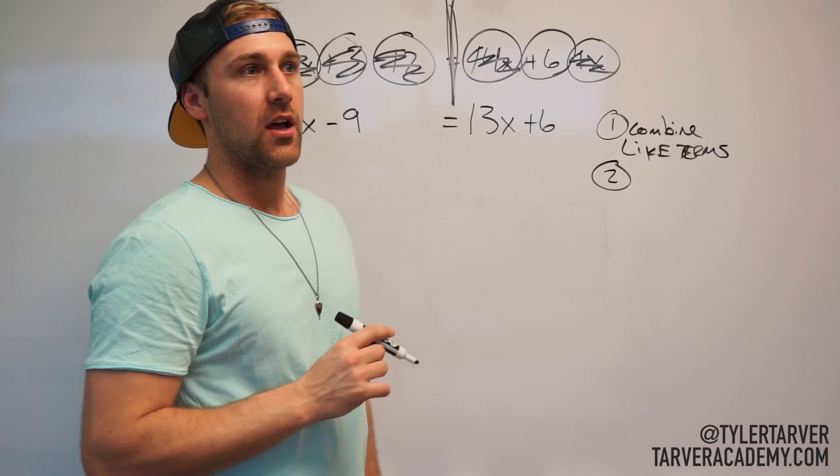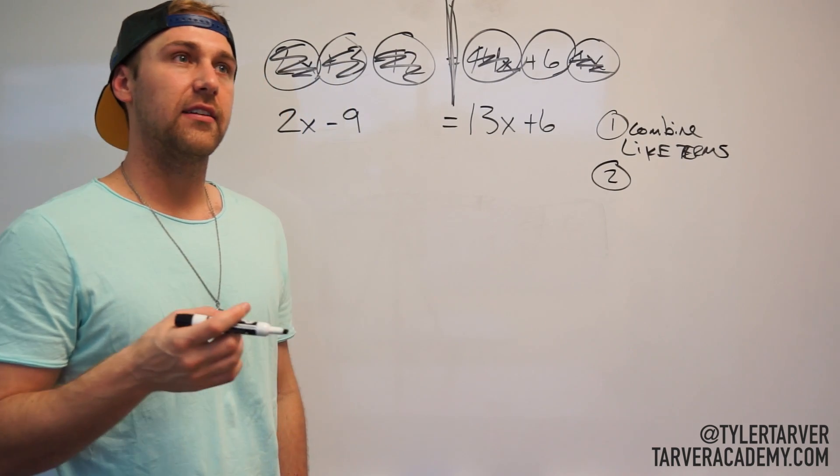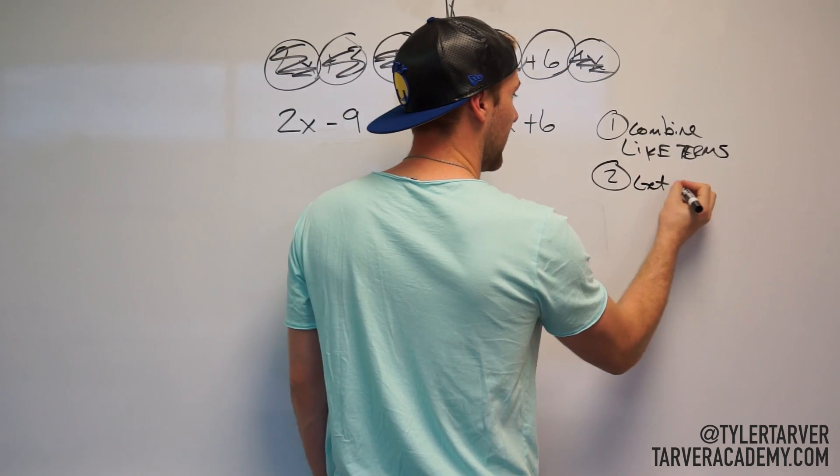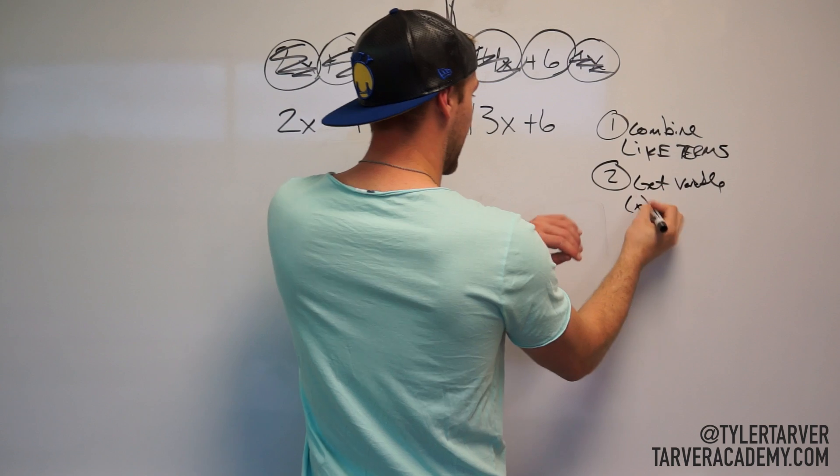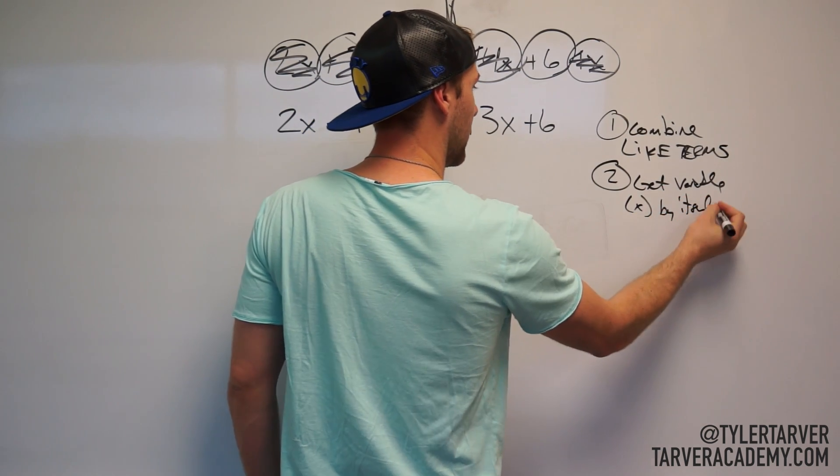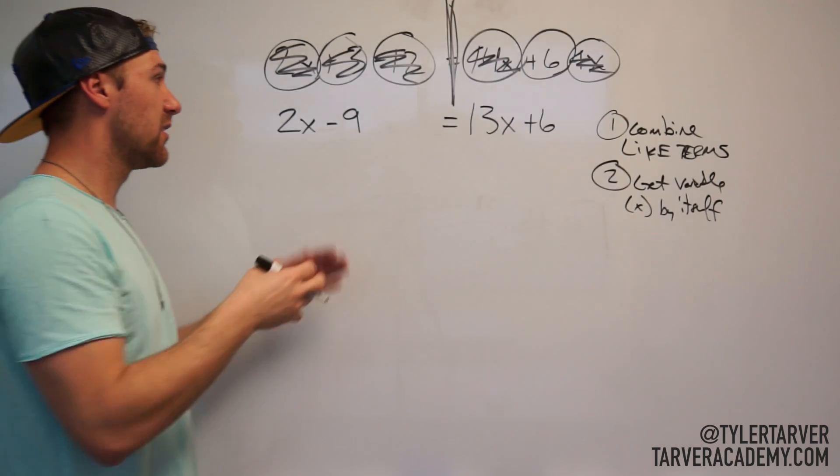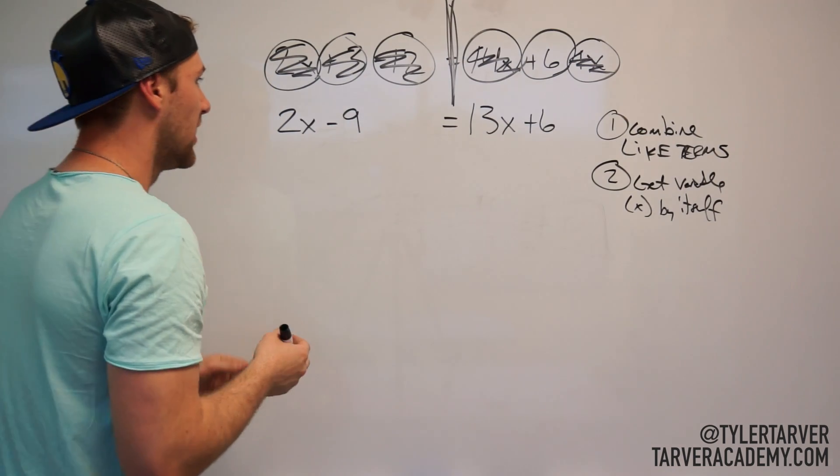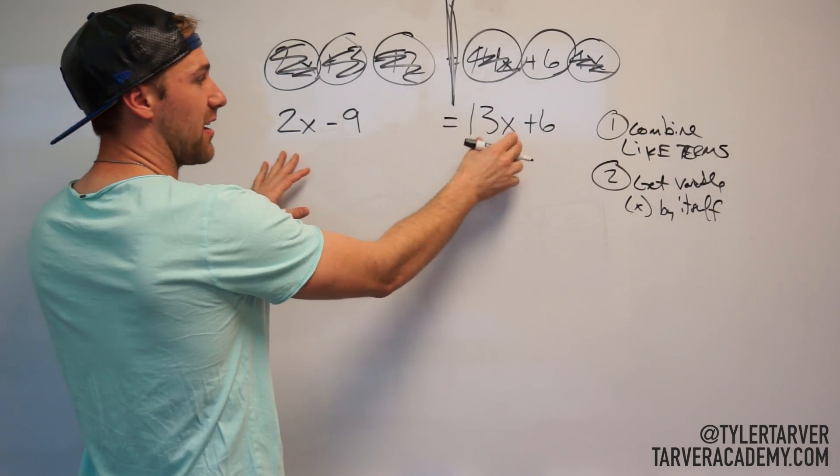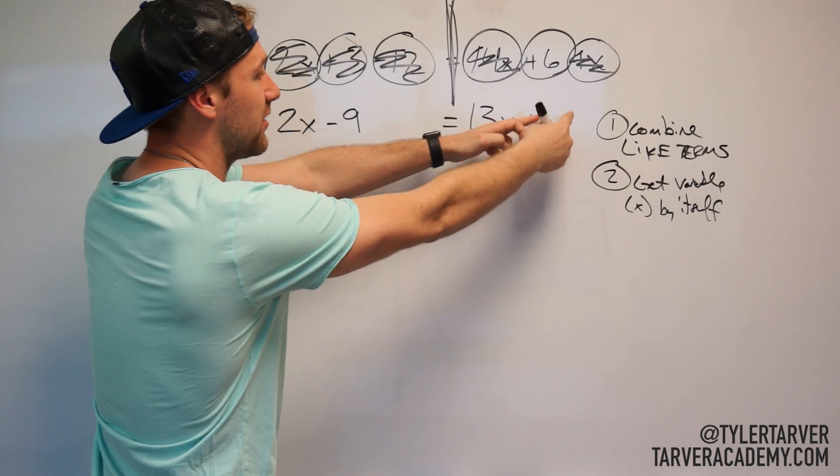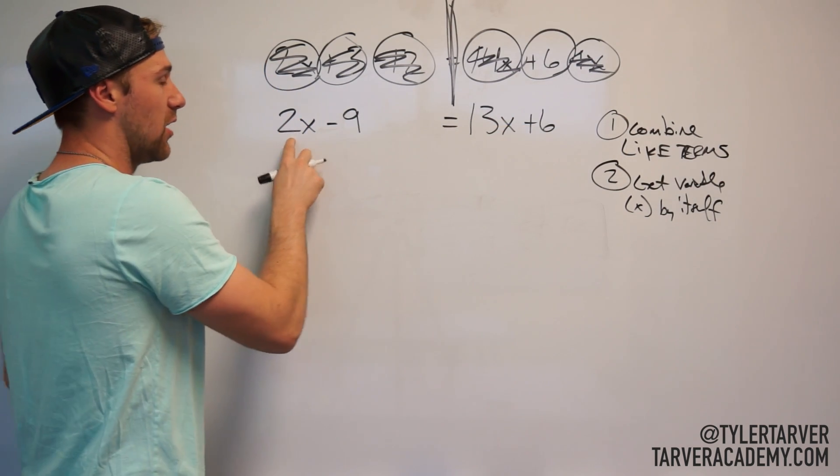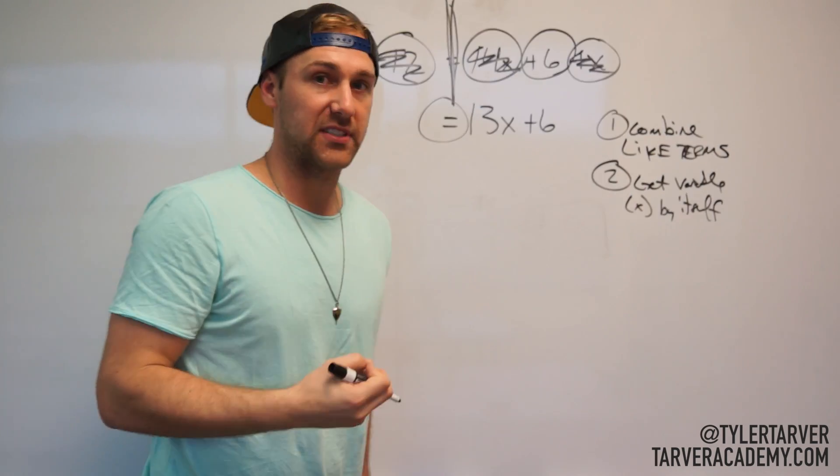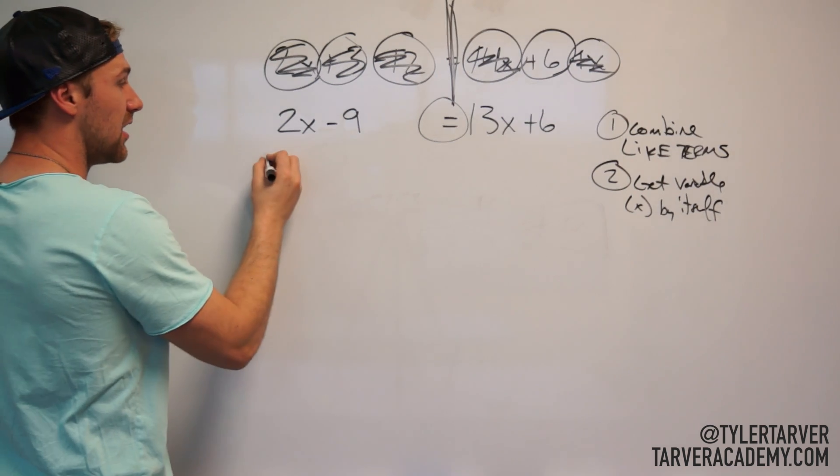Get the variable by itself, get variable, in this case it's x, by itself. To do that, you've got to get all your x's to one side and all your regular numbers to one side. Okay, so let's say we've got a bigger amount of x's over here, so I want to get these x's over here, I want to get these regular numbers over here.